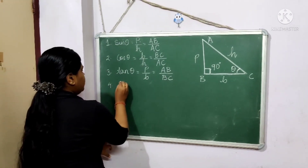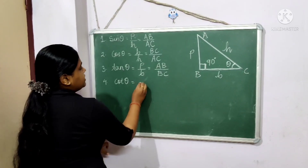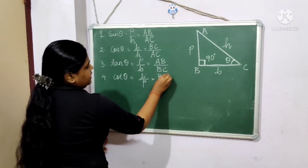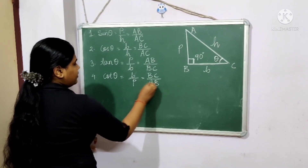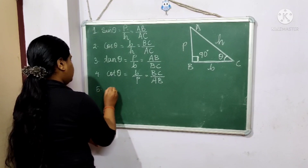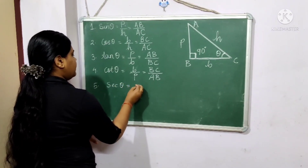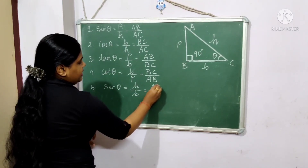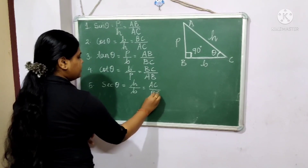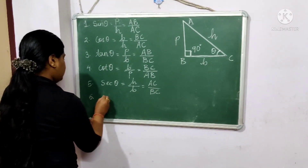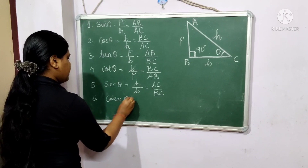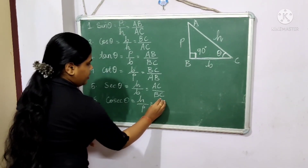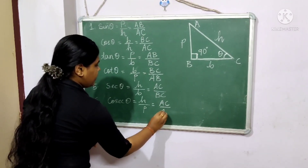Fourth one is cot theta, which is base by perpendicular, that is BC by AB. Fifth one is sec theta, which is hypotenuse by base, that is AC by BC. Sixth one is cosec theta, which is hypotenuse by perpendicular, that is AC by AB.